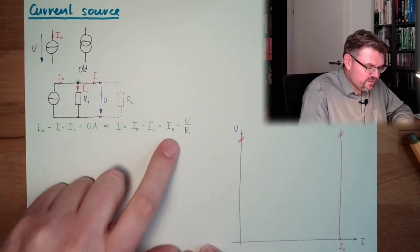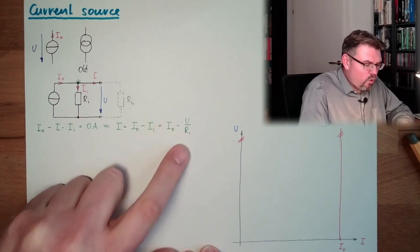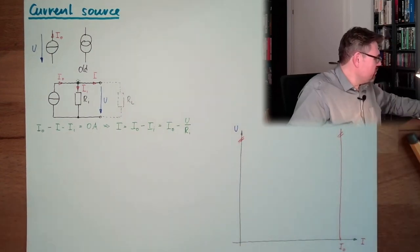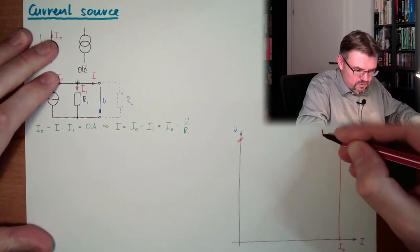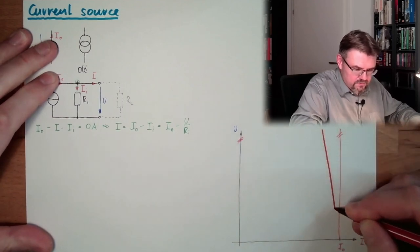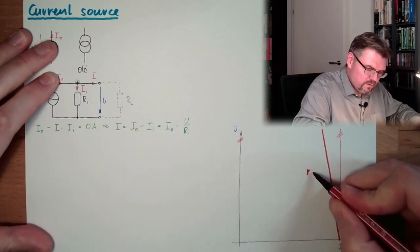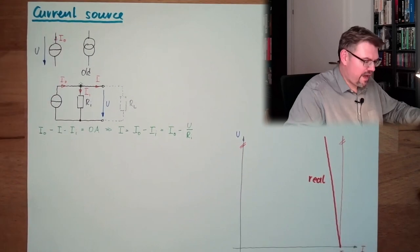And this is already the common relation. You see, there is I0, and the bigger U will get, the smaller I will get. So, in reality, it would look like that, that this is linear but dropping. Something like that. This is real. And this is ideal.